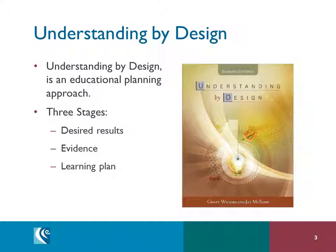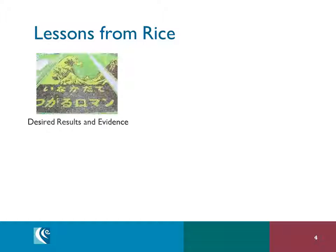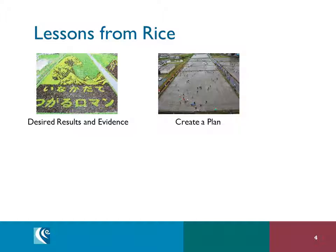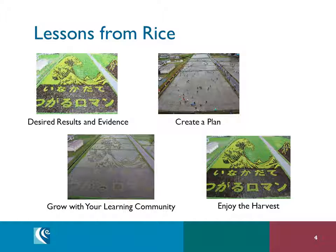We will turn to a small town in Japan for unpacking this three-part approach. In Inakadate, Japan, they have been creating large-scale rice art for over 20 years. From their desired results, they must create a plan by starting with the end in mind. What is the evidence in the form of multicolored rice that will bring their desired results to life? What learning plan is going to ensure that rice grows where intended? Once the rice is growing, teachers and students must think about how to adjust what's going on so that the rice continues to grow. Then, over time, with practice, they enjoy the harvest.